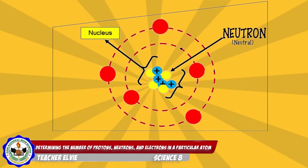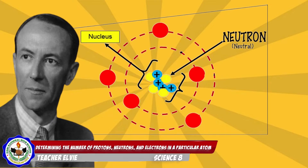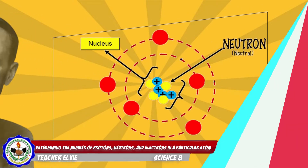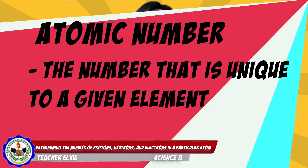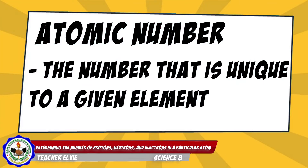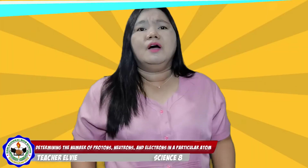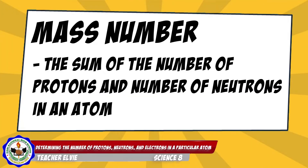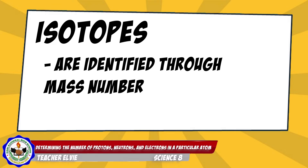The other particle, neutron, does not carry any charge and is electrically neutral. It is also found inside the nucleus of an atom, and it was discovered by James Chadwick. One characteristic common to all atoms of an element is the number of protons in the nuclei. The number unique to a given element is called the atomic number. The atomic number tells the number of protons, which is also equal to the number of electrons. The mass number is the sum of the number of protons and neutrons in an atom. Atoms having the same number of protons but different numbers of neutrons are referred to as isotopes, and they are identified through their mass number.